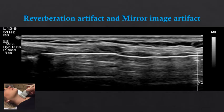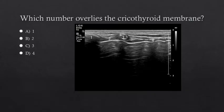Deep to these laryngeal structures, we see reverberation artifact and mirror image artifact due to the presence of gas within the trachea. Take a moment to look at this ultrasound image and decide which number overlies the cricothyroid membrane. In this image, the thyroid cartilage is represented by number 1, the cricoid cartilage is number 3, the cricothyroid membrane is number 2, and number 4 overlies a tracheal ring.